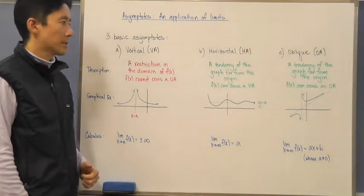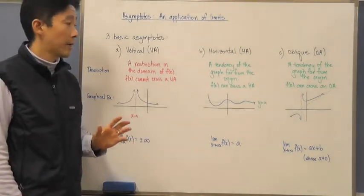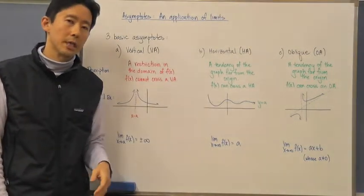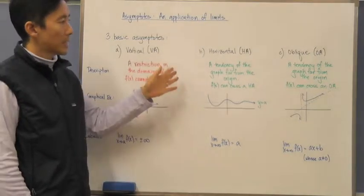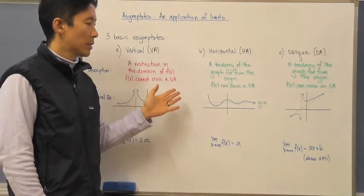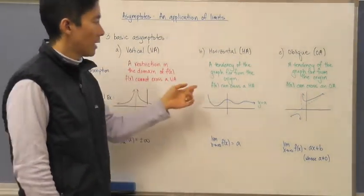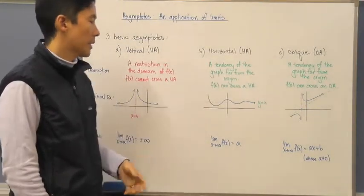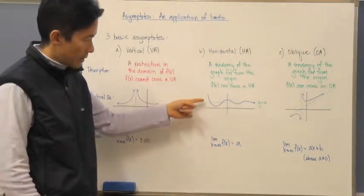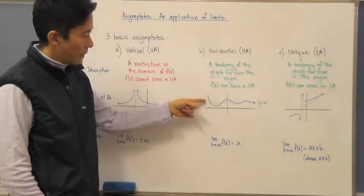Now let's look at the horizontal asymptote, which is very different from a vertical asymptote. A horizontal asymptote is not a restriction at all — it is a tendency of the graph very far from the origin to approach a particular value, a range value. Importantly, f of x can cross a horizontal asymptote. For example, consider the horizontal line y equals a.